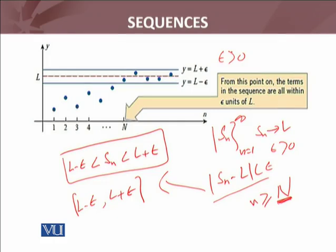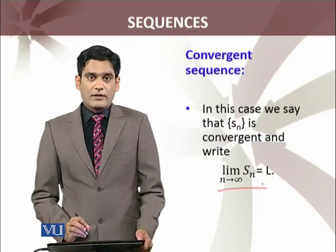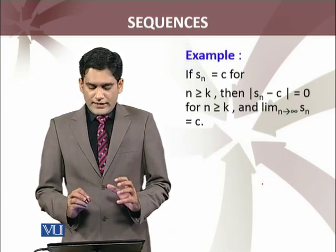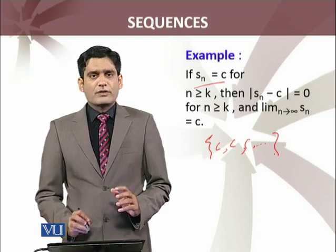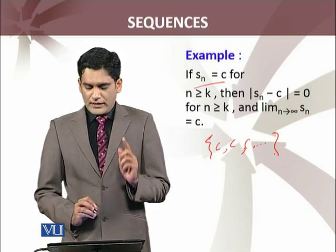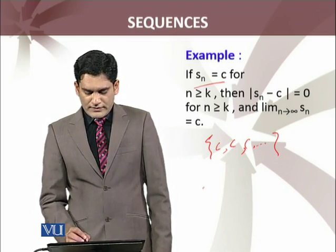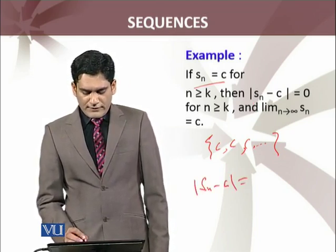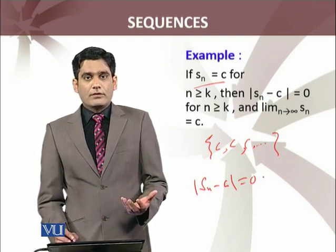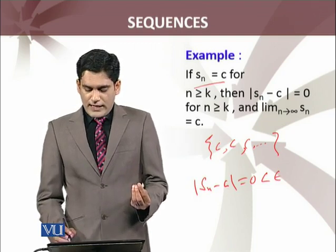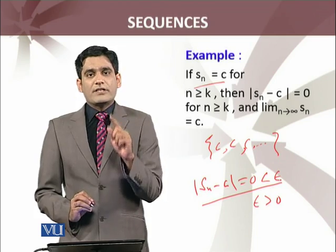If the sequence is convergent, we write: limit as N approaches infinity of s_N equals L. Let me give a simple example. If s_N is a constant sequence — C, C, C, and so on — then the limit as N approaches infinity will be C. To verify mathematically, we consider |s_N minus C|. Since each term equals C, this equals 0, which is of course less than epsilon for any epsilon greater than 0. So this sequence is convergent and its limit is C.